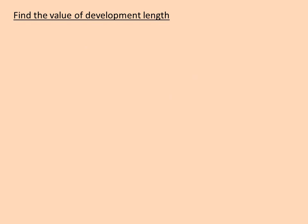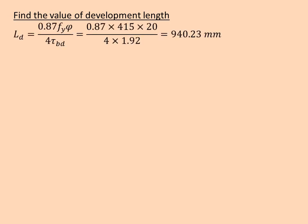Now we find the value of development length so that the steel reinforcement can attain its full strength. Ld is equal to 0.87·fy × φ / 4·τbd. For M25, τbd value, that is bond stress value, is 1.92. τbd is bond stress value here. Live load is acting, so it is a tensile load. In tension, bond stress values are directly given to us in the table. And we get 942.23.